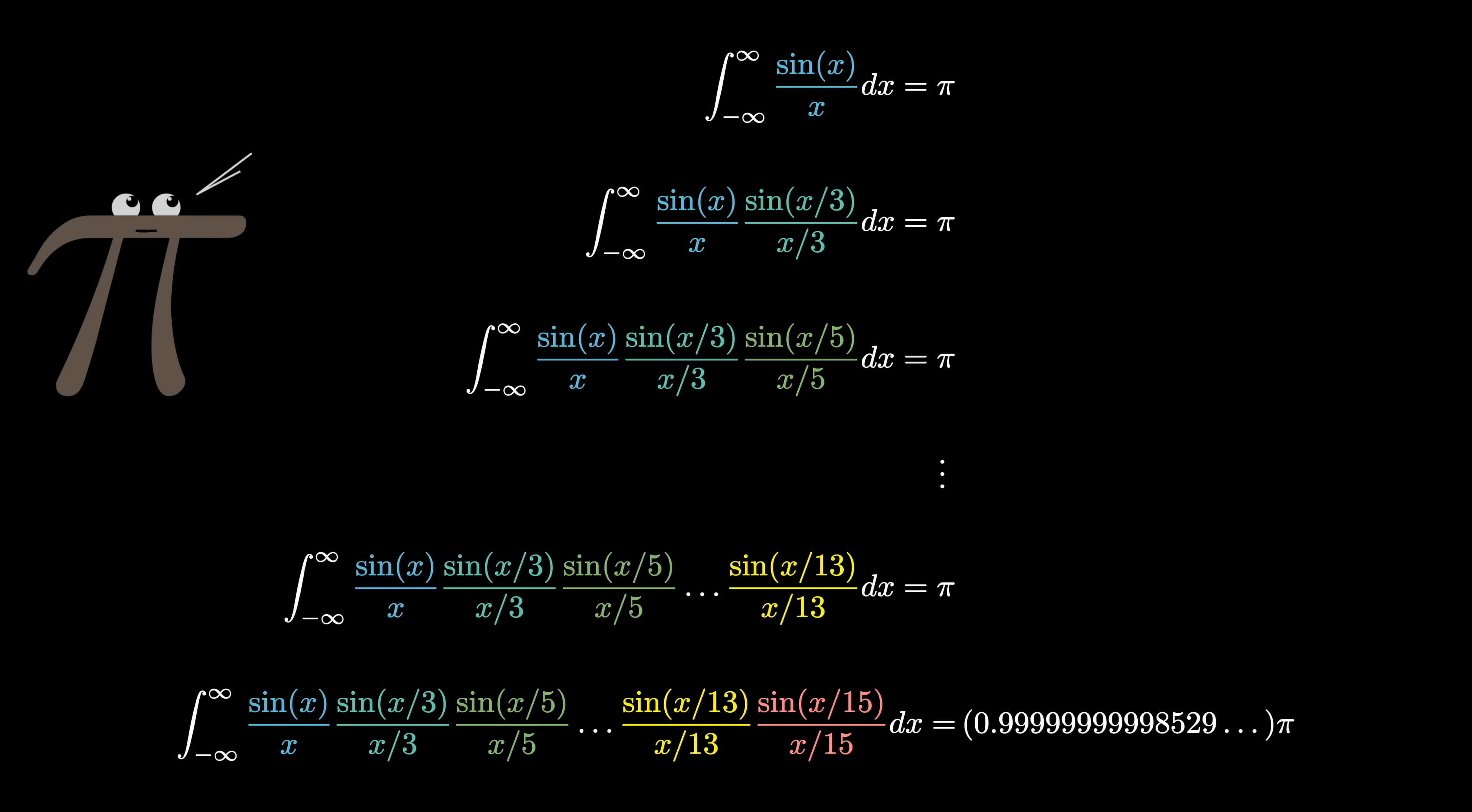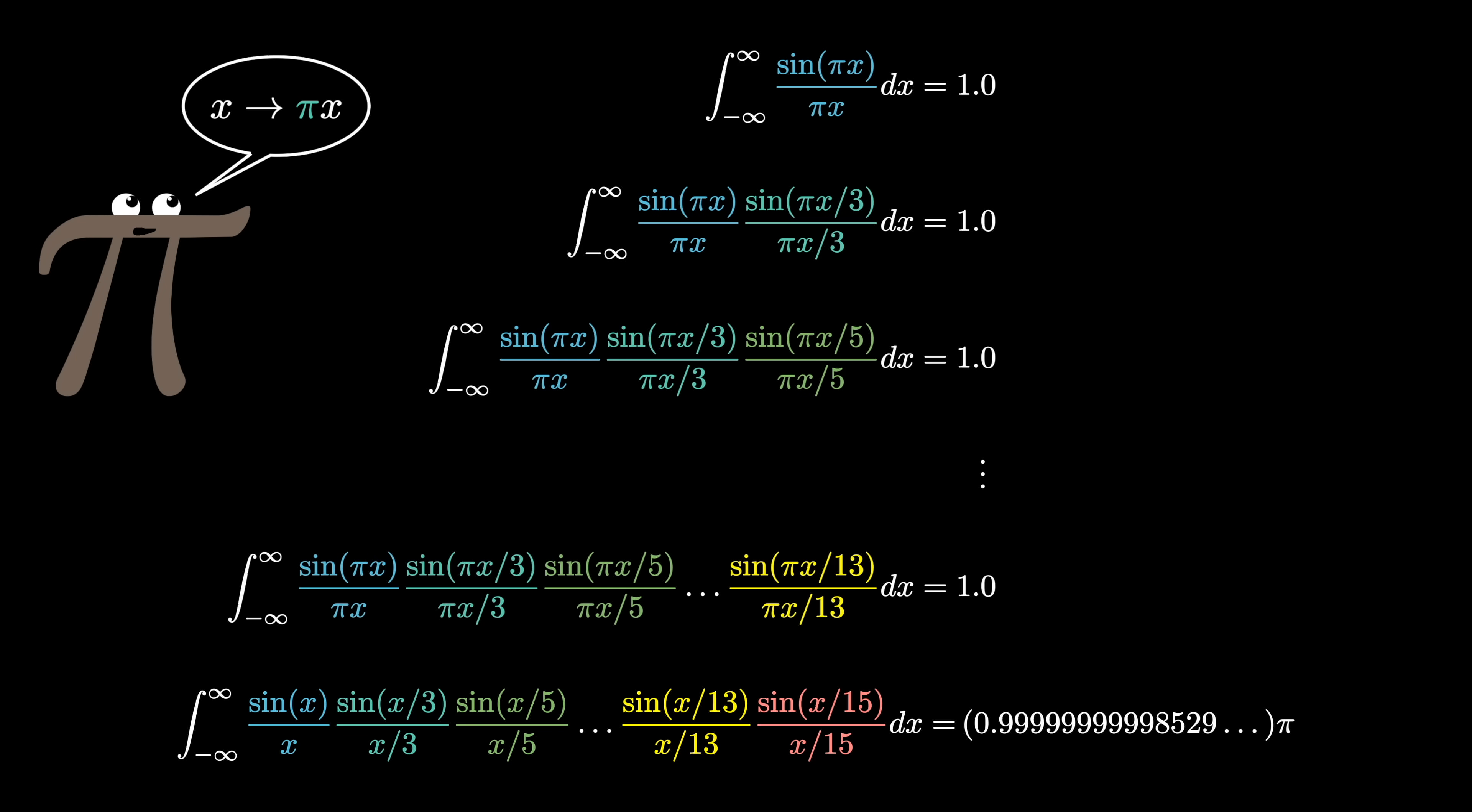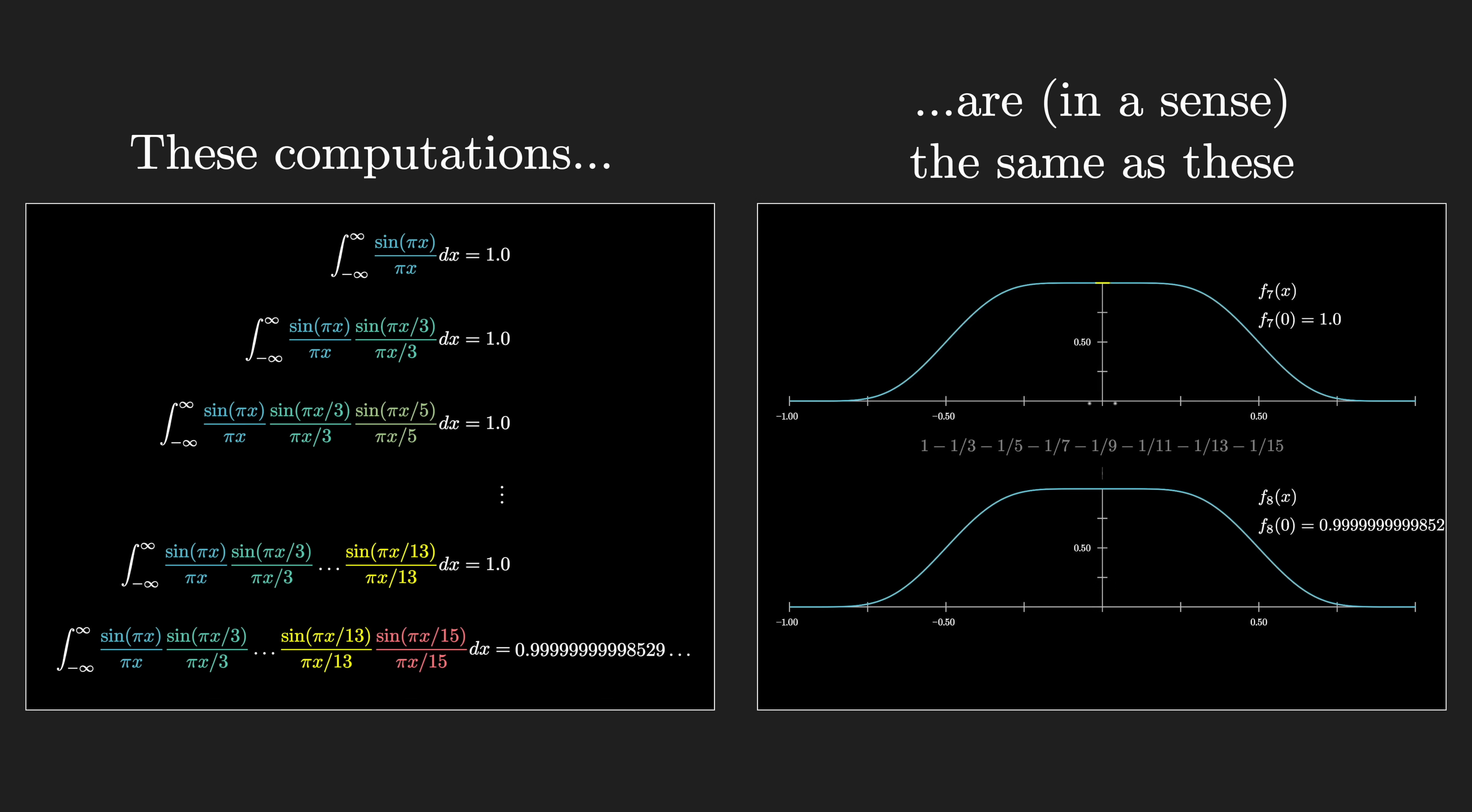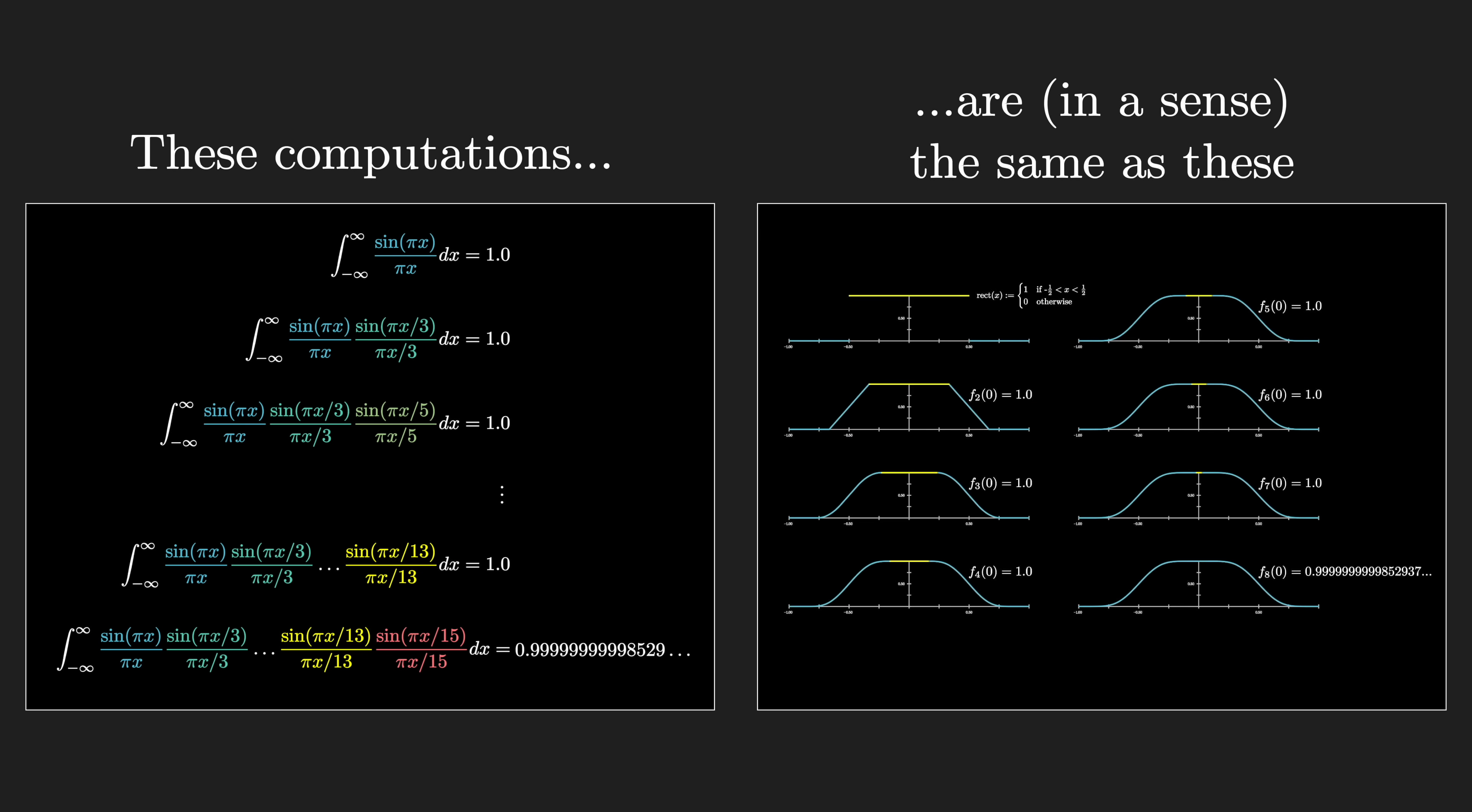And likewise, for all of the other ones in our sequence, go through each of them, replace the x with a pi times x, and from here, the claim is that all these integrals are not just analogous to the moving average examples, but that both of these are two distinct ways of computing exactly the same thing.